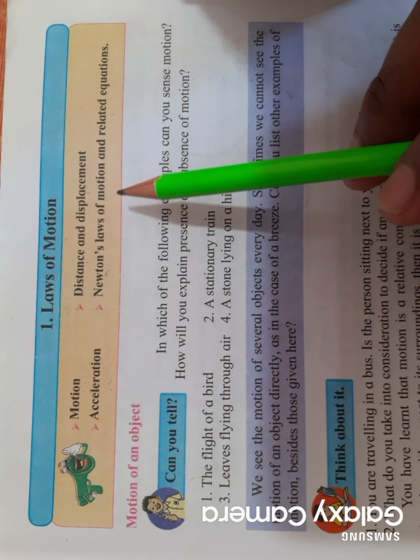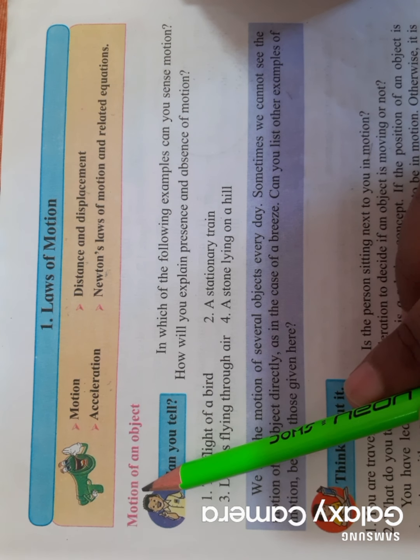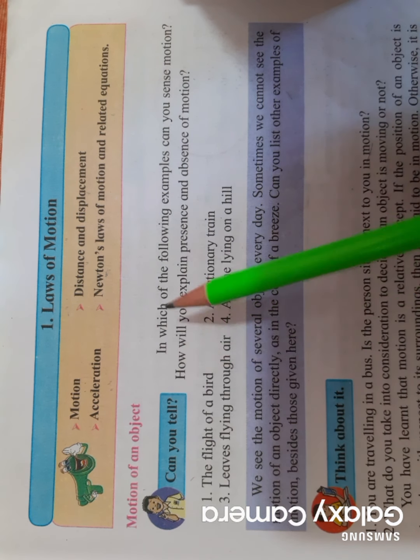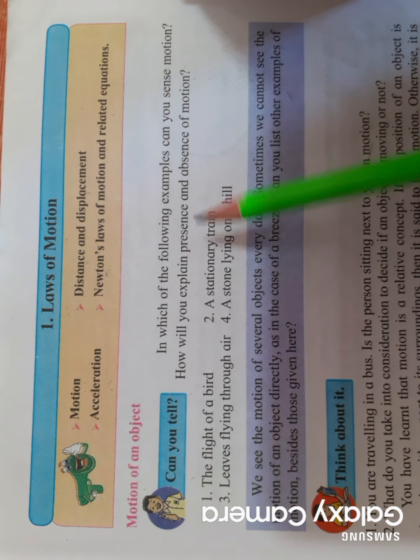Let us try to understand the concept of motion first. They are asking you to recall, giving some examples, and asking you to find out in which examples the object is in motion or is stationary. Stationary means it is at rest at one particular point.